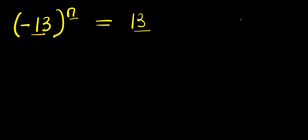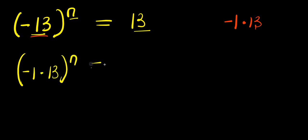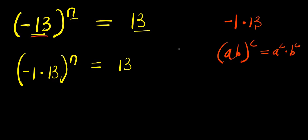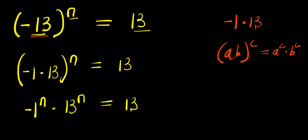We start by writing negative 13 as negative 1 times 13, so we have negative 1 times 13 power n equals 13. Now, if you have ab raised to the power c, this equals a power c times b power c. Applying that here, we have negative 1 power n times 13 power n equals 13.